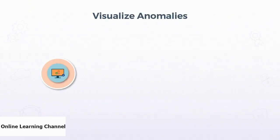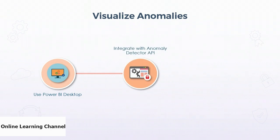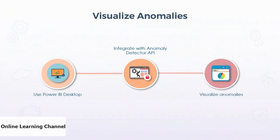Anomalies passed as JSON files, while human readable, are difficult to interpret in a batch. Power BI Desktop can be used to visualize anomalies and trends determined by Anomaly Detector. Power BI Desktop can use its built-in queries to integrate with the Anomaly Detector API, enabling it to send and receive data. Using the data it receives back, it can provide rich visual representations of anomalies and trends.